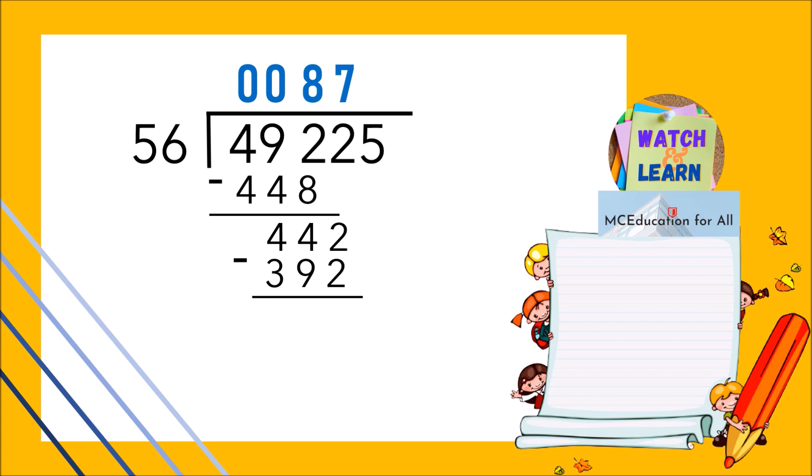442 minus 392 is equal to 50. Bring down 5. Estimate how many times 5 goes into 50. The answer is 10. Since it is not allowed to write 2-digit number on the quotient at the same time in a single step, we will take the highest single digit number which is 9 instead.